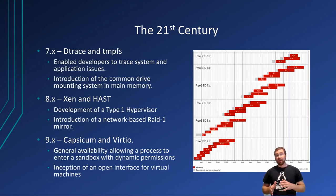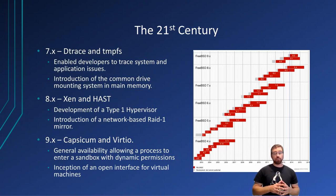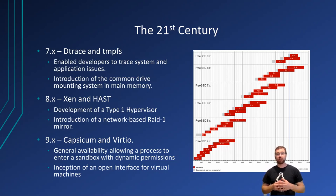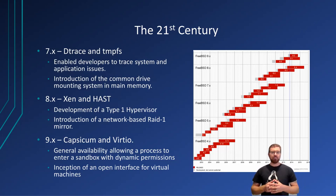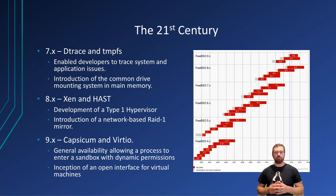Just a few months later in 2009, FreeBSD 8 was released supporting a Type 1 hypervisor called Xen. With a clear focus towards business, FreeBSD supported and released HAST, also known as High Availability Storage, which functions as a network-based RAID 1 mirror. HAST's implementation increased the reliability of FreeBSD as an operating system and as a data hosting platform.